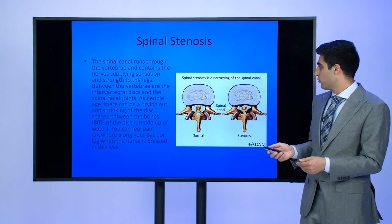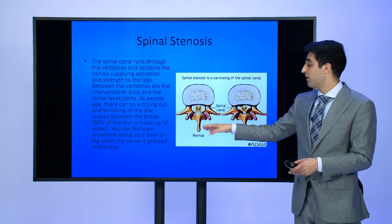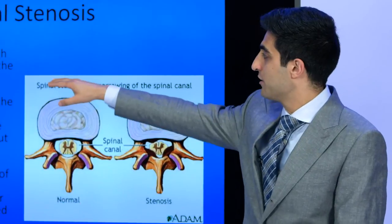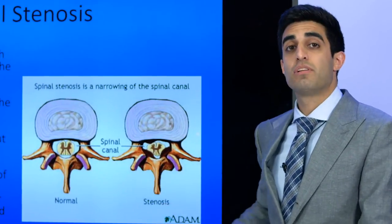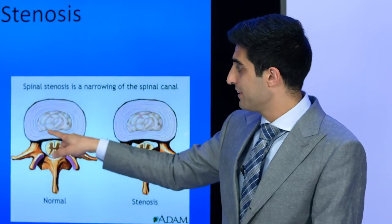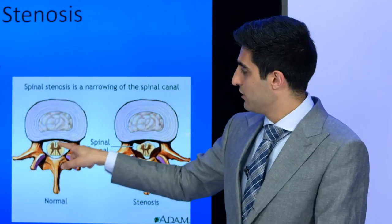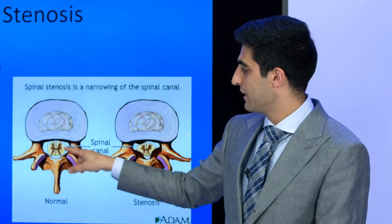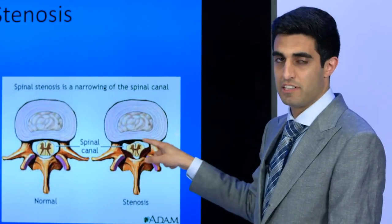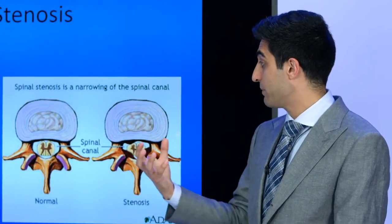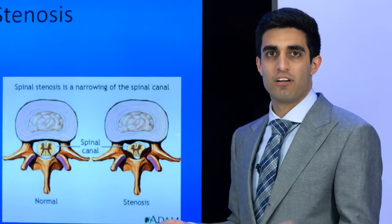Looking at a cross-section, in a normal spine there is a lot of white space around the spinal canal for the nerves. But in someone with spinal stenosis, you can see significantly less space in the canal, which means less room for the nerves. Spinal stenosis simply means less space for the nerves within the canal.